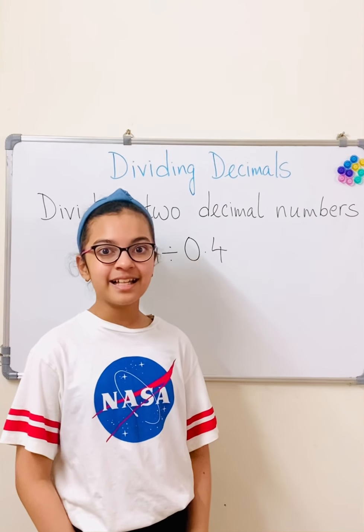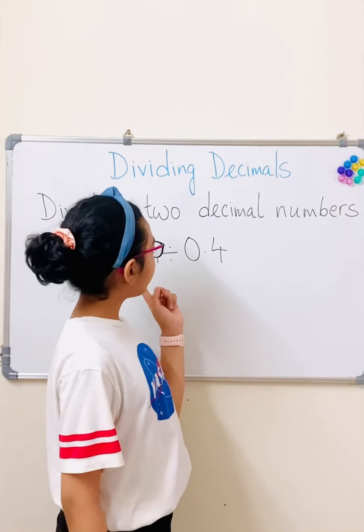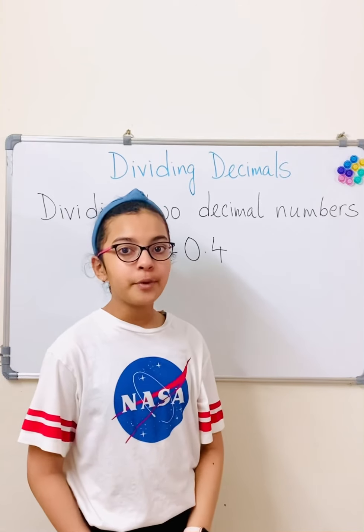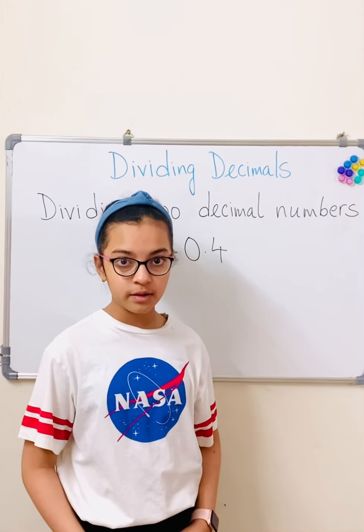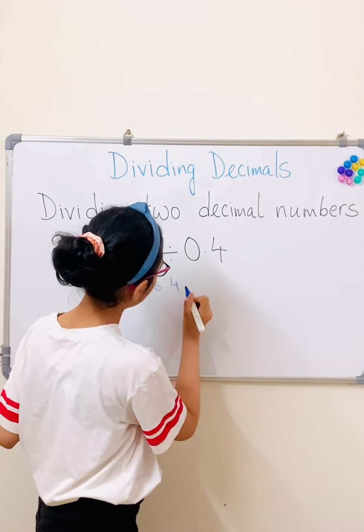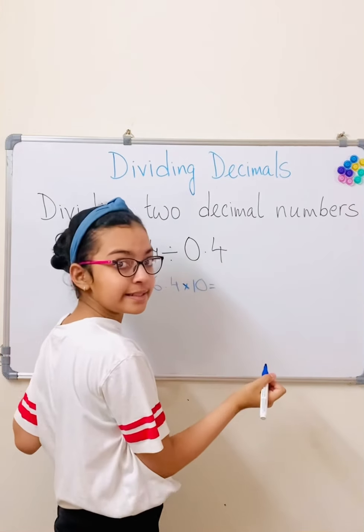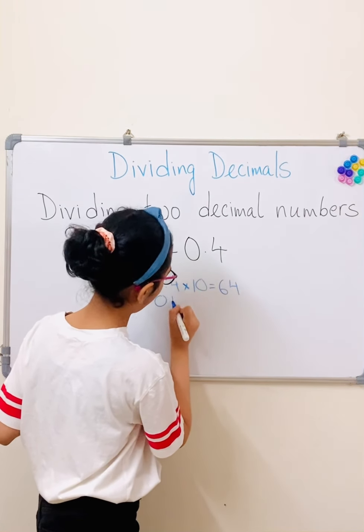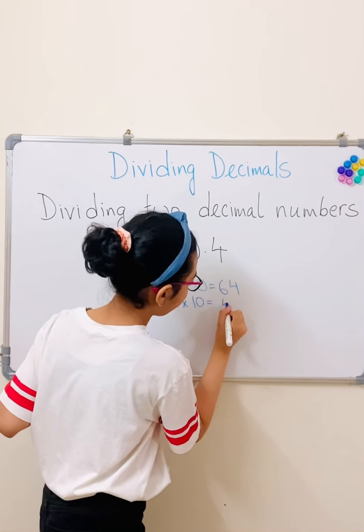Okay guys, so here's our second trick. Dividing two decimal numbers. So we can take 6.4 divided by 0.4. And now we just need to multiply both of them by 10 until they are whole numbers. So if we do 6.4 into 10, we're going to get 64. And if we do 0.4 into 10, we're going to get 4 for our answer.